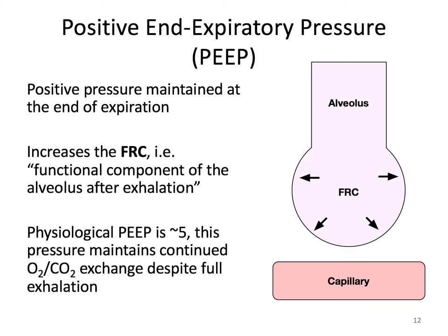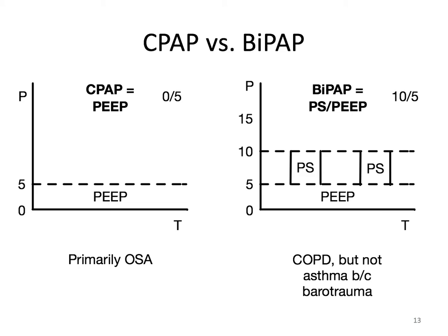Two very common oxygenation modalities that augment PEEP and the increase in FRC are CPAP and BiPAP. With CPAP, the setting established is the PEEP, maintaining a constant opening of the airways at end of expiration; this is used primarily in obstructive sleep apnea where maintaining this constant pressure keeps the airway open. With BiPAP, there are two settings — PEEP, maintaining that baseline openness, and pressure support, which gives an additional boost of pressure to maintain open airways. BiPAP is often used in COPD to help blow off CO2, but is never used in asthma because of the risk of barotrauma. The benefit of CPAP and BiPAP is increased FRC, which results in more alveolar recruitment, more surface area, and more diffusion of oxygen, allowing a higher PEEP to support a lower FiO2.